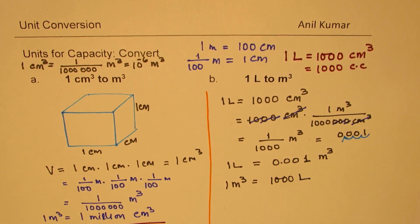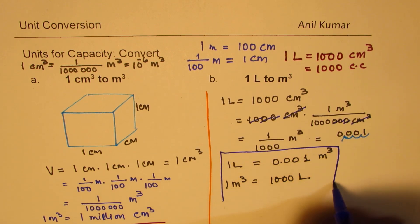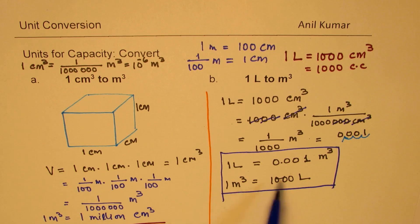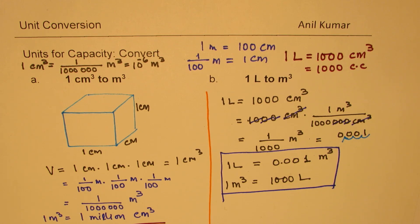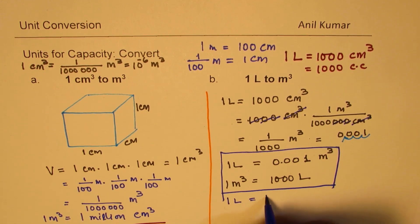So either way, as the situation demands, you can use this conversion factor. These are very important conversion factors which you can visualize and understand. One meter cube is one thousand liters, and one liter is one thousand centimeter cube. Let me write them: one meter cube is one thousand liters and one liter is one thousand centimeter cube.